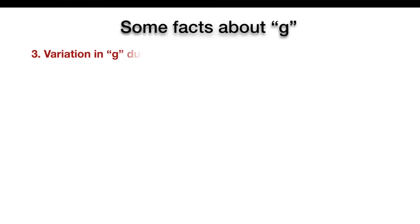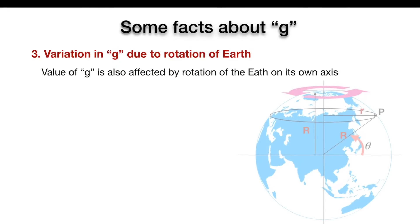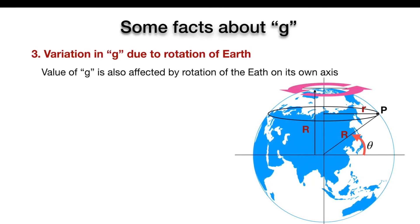There is one more factor which affects the value of g: the rotation of the Earth. Because of the Earth's rotation, every object on the Earth's surface will feel a centrifugal force directed outward. Here, small r is the radius of the circle in which the object at the surface is rotating, and this equals R cosθ, where capital R is the radius of the Earth and θ is the latitude angle.